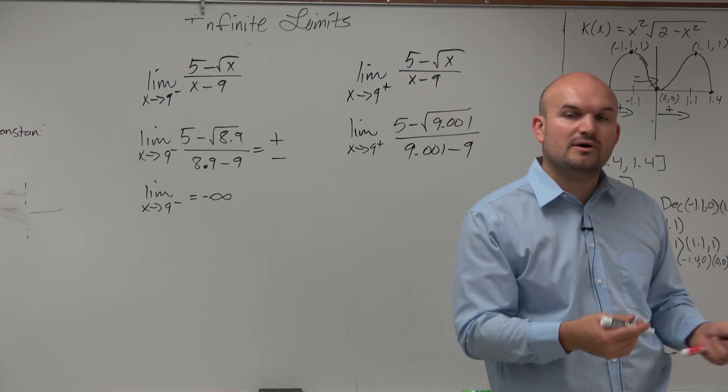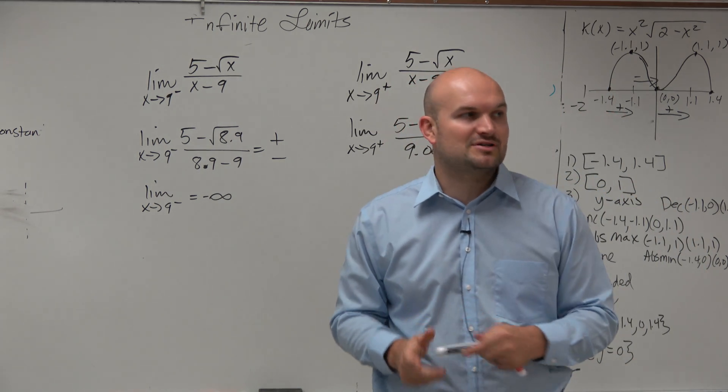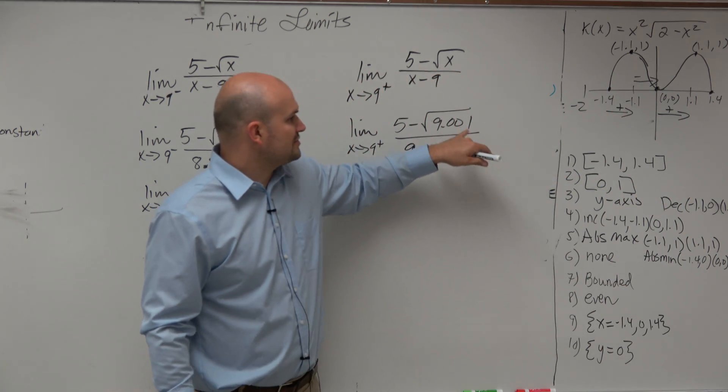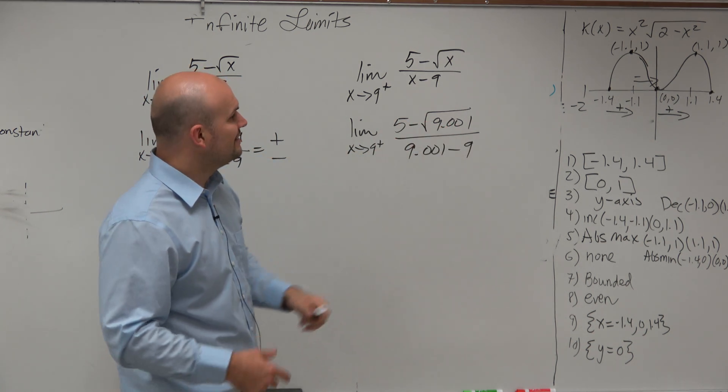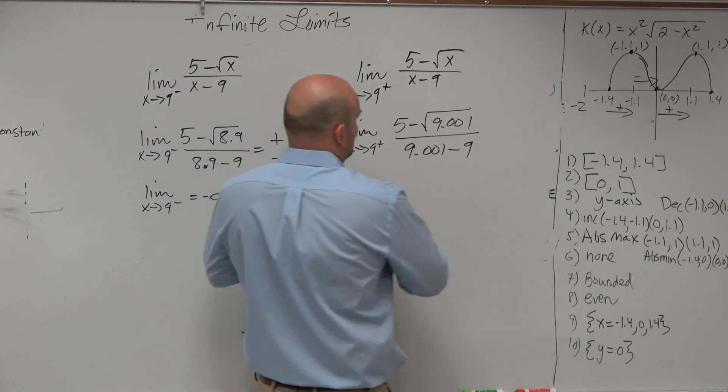And again, we don't need to know the square root, but it can't be that much. If the square root of 9 is 3, the square root of 9.001 cannot be that much larger than 3, right? So 5 minus 3, or 5 minus that number, is still going to be a positive.